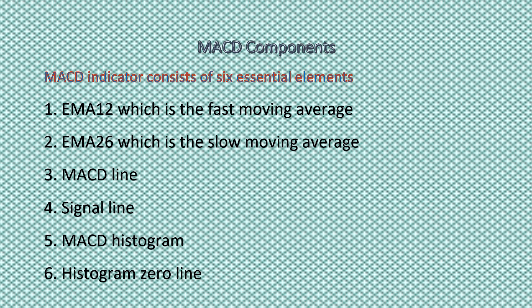MACD indicator consists of six essential elements. The first one is EMA12 — Exponential Moving Average with the 12-day period — which is the fast-moving average. Then EMA26, which is the slow-moving average, the MACD line, signal line, MACD histogram, and histogram zero line.